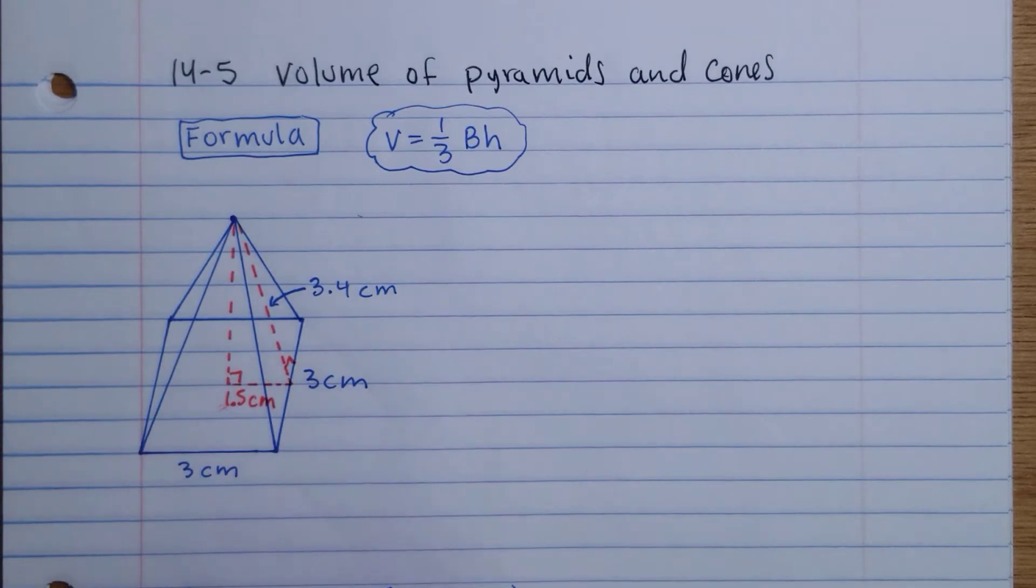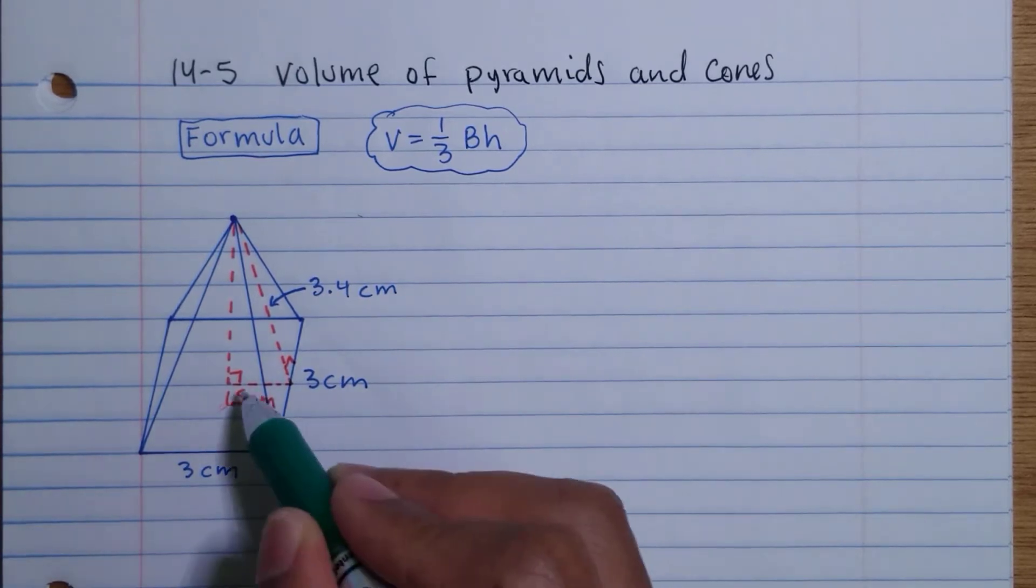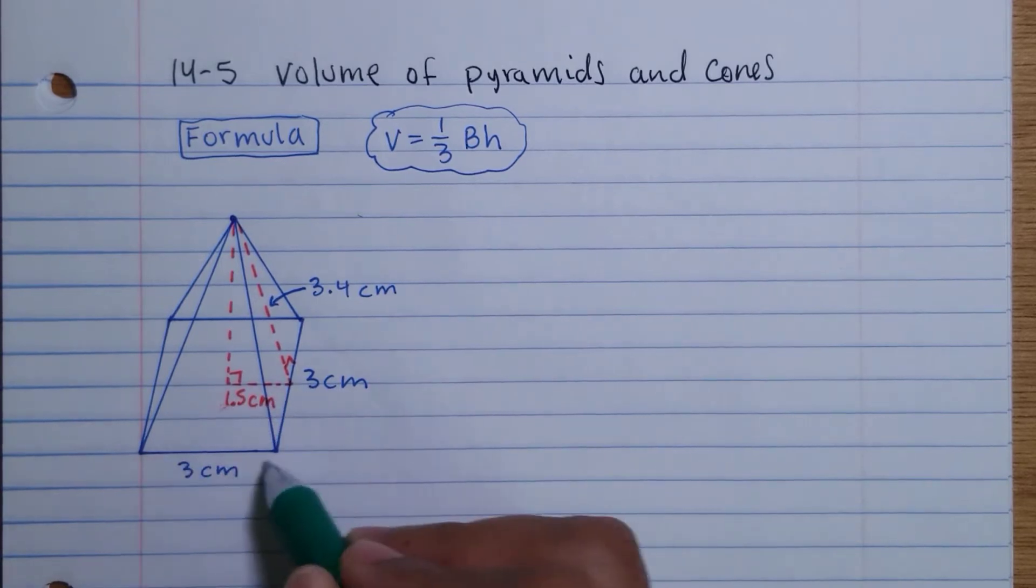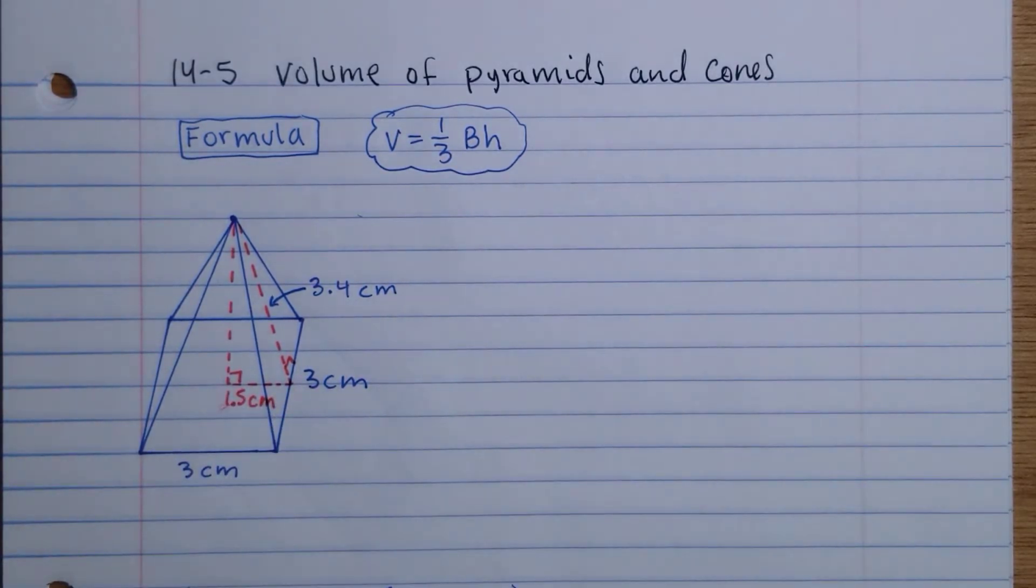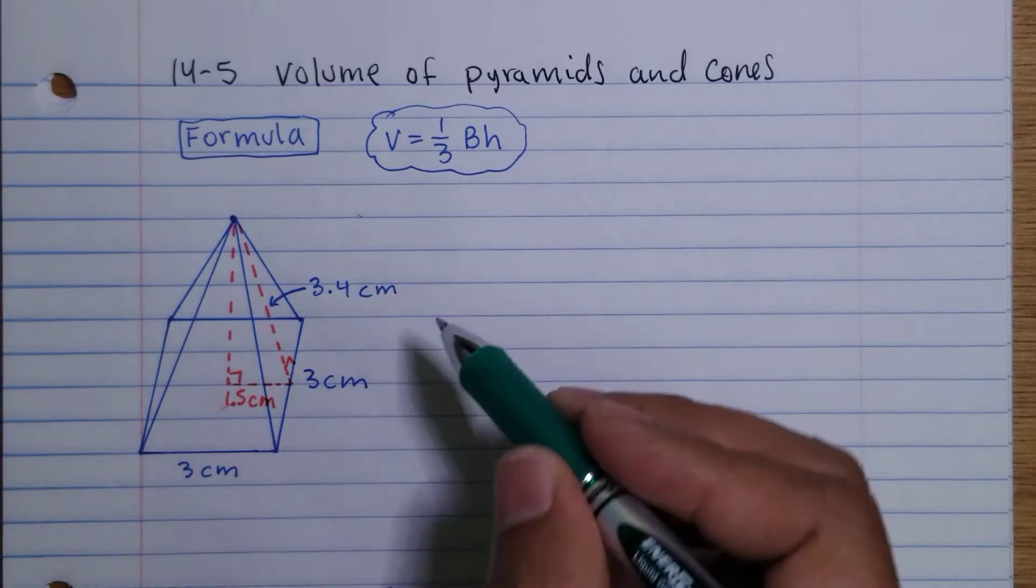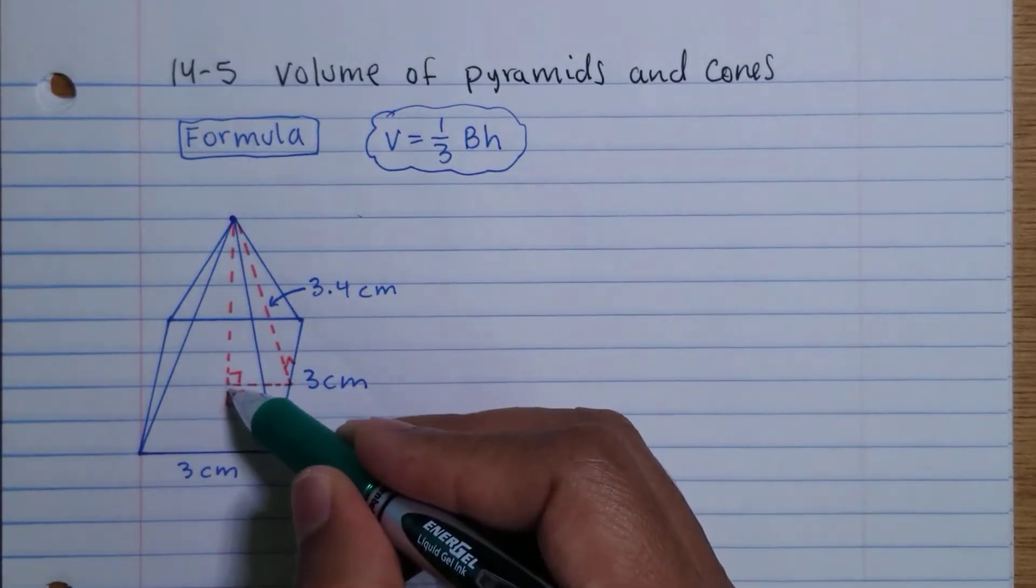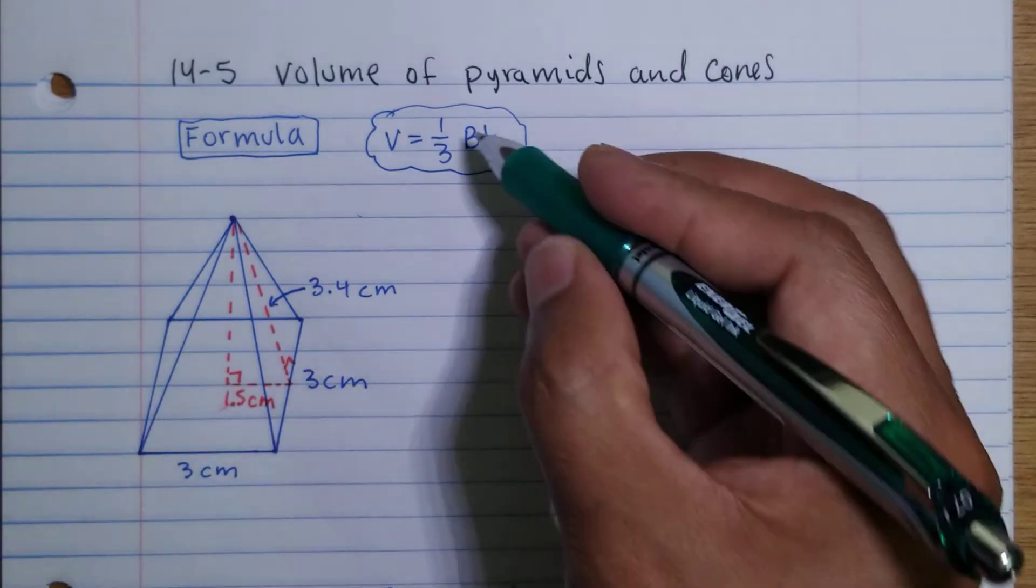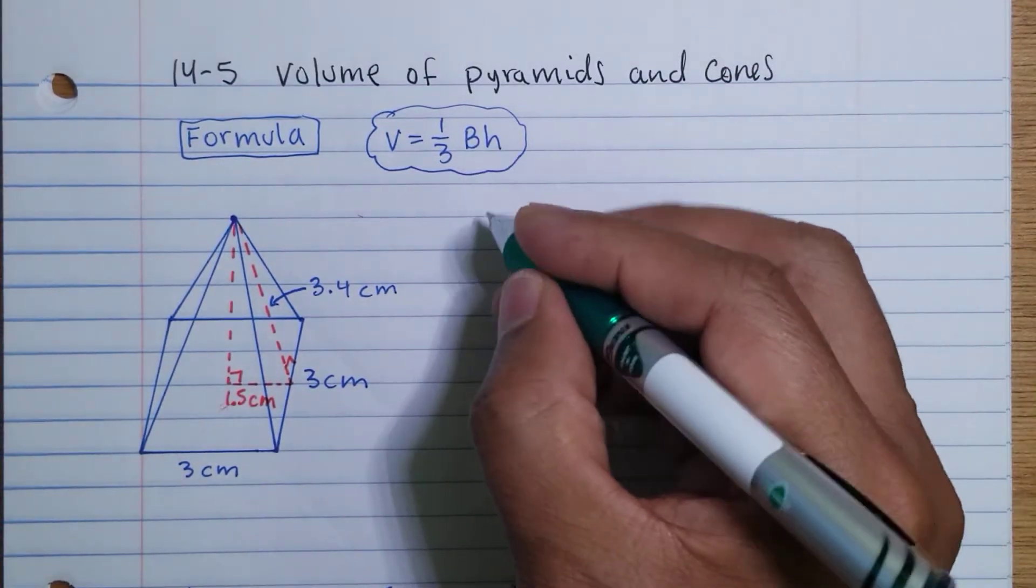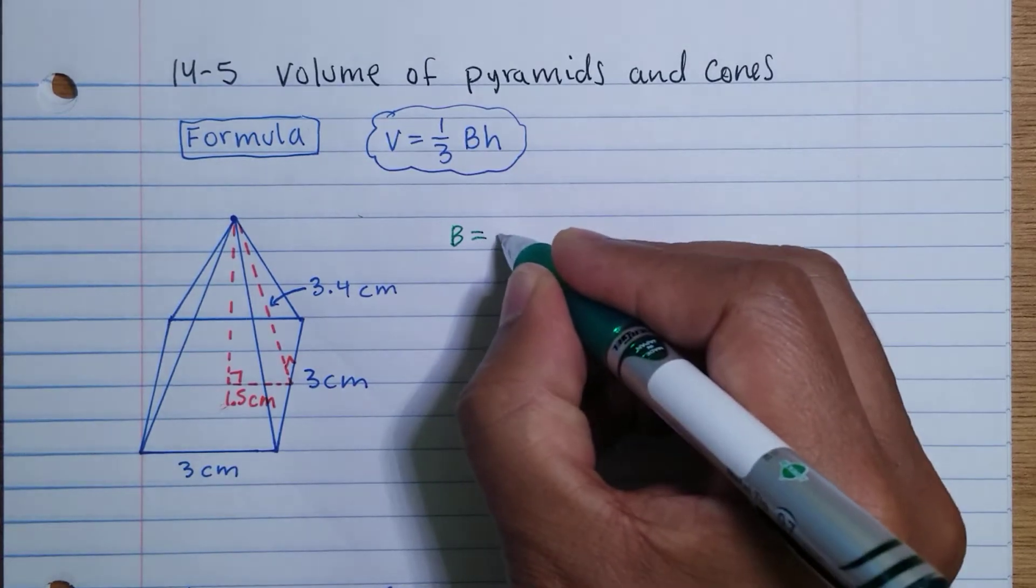So that's going to be 1.5. So far we don't have this height, but we can find B for now. So let's start by doing that. B is going to be equal to, since this is a square, the base times the height.